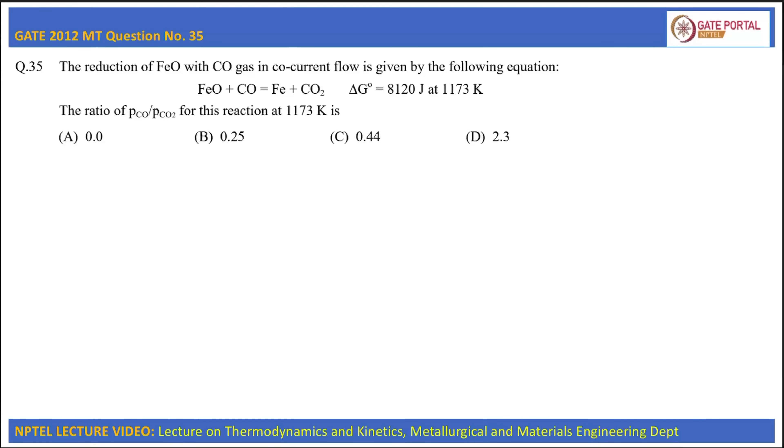This is question number 35 of GATE 2012 metallurgical engineering. The reduction of FeO with CO gas in co-current flow is given by the following equation: FeO + CO = Fe + CO2, ΔG° = -8120 joule at 1173 Kelvin. The ratio of PCO by PCO2 for this reaction at 1173 Kelvin is: option A 0, option B 0.25, option C 0.44, and option D 2.3.